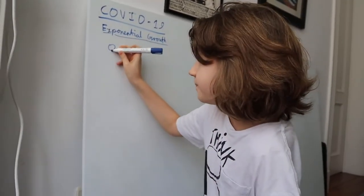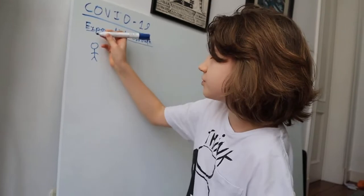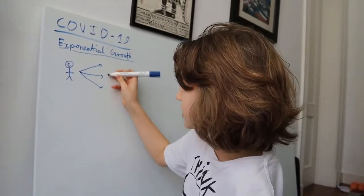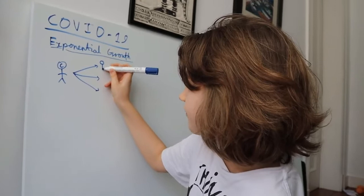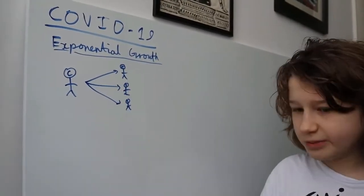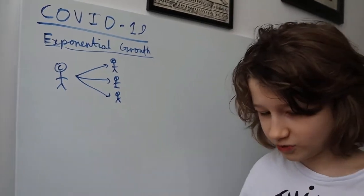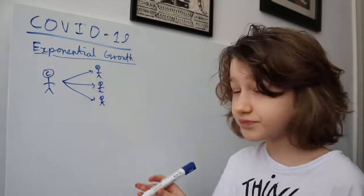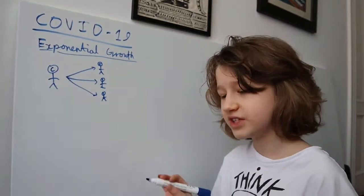A single sick person with coronavirus can transmit the virus to at most three other people, which is a lot compared to other viruses. Let's see why.